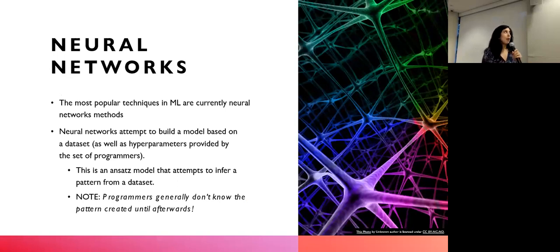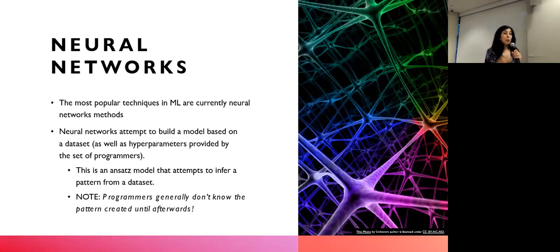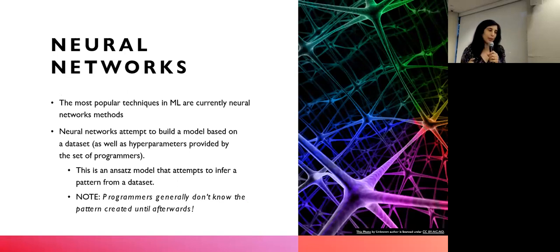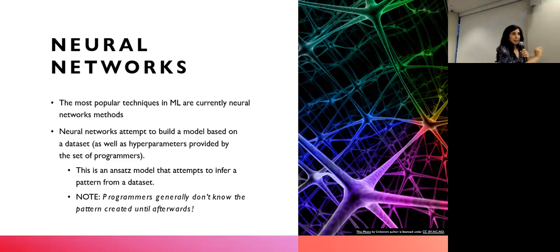Neural networks are a big part of what allows for these types of models to exist. With the Moneyball example, a lot of their stuff was just linear regression. But with the chihuahua versus the muffin, we're really using something called a neural network. These neural networks are basically built off of little smaller functions that we call neurons, and they have a historical reason for being called neurons. You put a bunch of neurons together and you build a model. What the programmer is deciding is the shape — how many neurons might be together — and some small changes. But it's the data set itself that guides the learning.